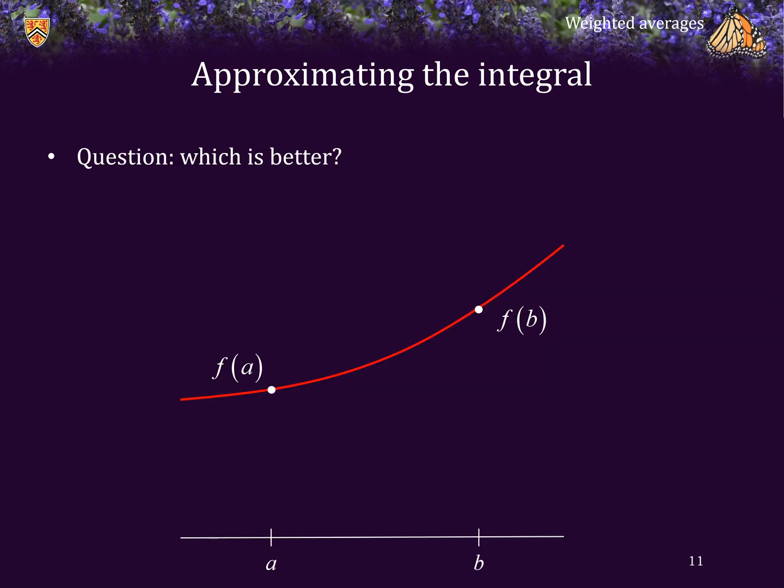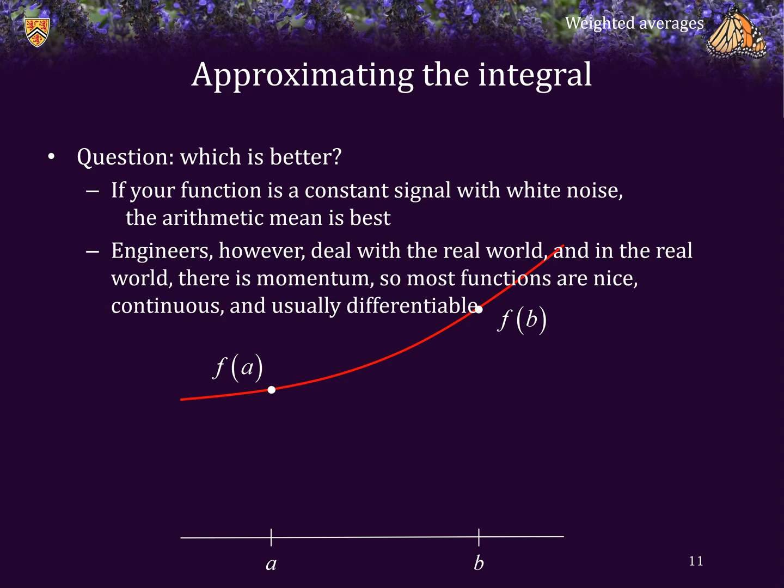Now which of these approximations is going to be a better approximation of the integral? Well, if your function is a constant signal with white noise, then the arithmetic mean is actually going to be the best approximation. However, engineers normally deal with the real world, and in the real world there's momentum, so functions tend to be generally nice, being continuous and usually differentiable.